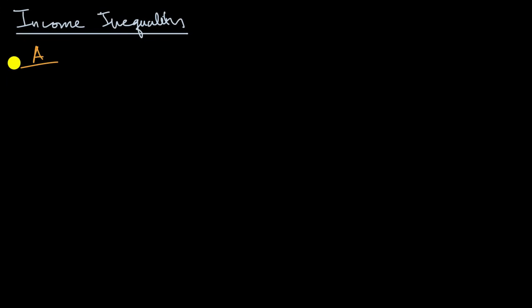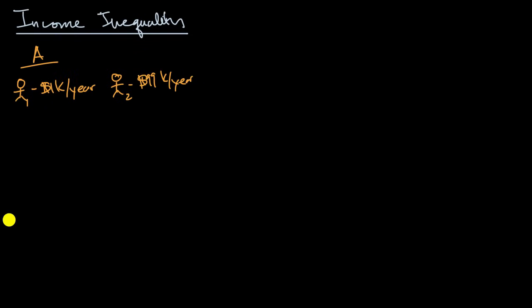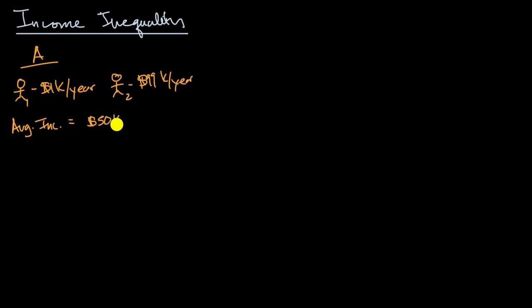Let's imagine first country A, and there are two people in country A. Person one makes $1,000 a year — that's their income. And then there's person two in country A that makes $99,000 a year. So what is going to be the average income in country A? If these are the only two people, you could think of it as the per capita national income. The average income — to figure that out, you would just average the $1,000 and the $99,000. So you have a total income of $100,000 divided by two folks, giving an average income of $50,000 per year.